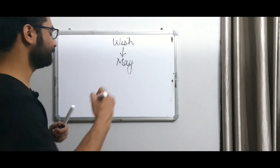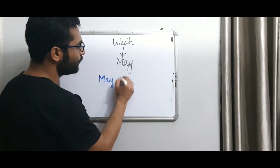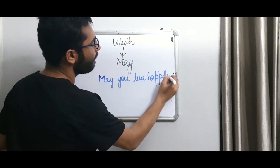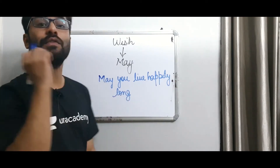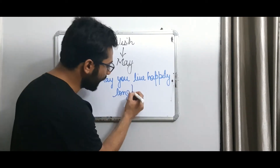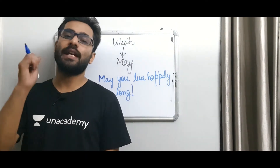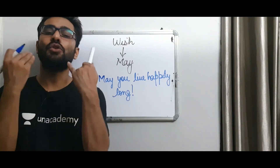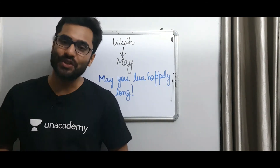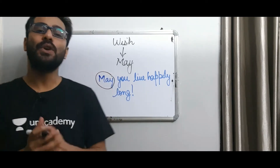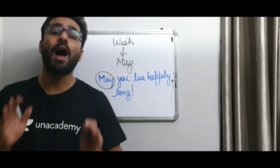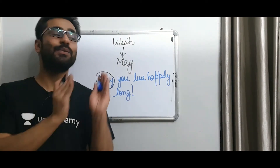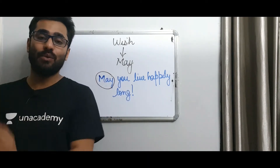In case of a wish, we can only use 'may', not 'can'. For example: 'May you live happily long!' — and when expressing a wish in a sentence, we add an exclamatory mark at the end. So this is a wish: 'May you live happily long!' In case of wishes, you use 'may', not 'can'. So 'May you live happily long!' is the correct usage of the modal verb 'may'.